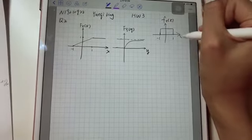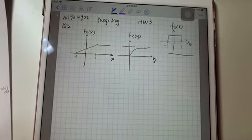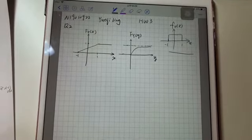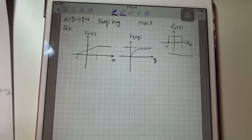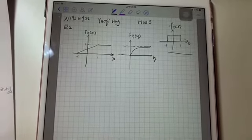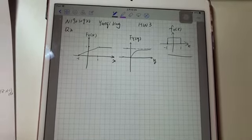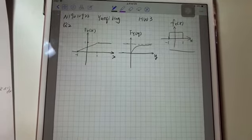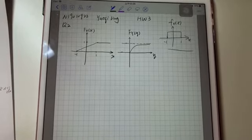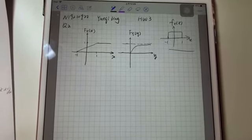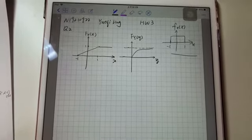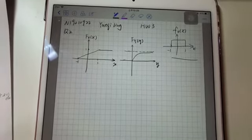It asks us to find g(x) such that if y equals g(x), then f_y(y) equals e to the minus y power, multiplied by u(y).